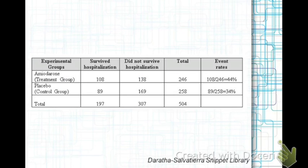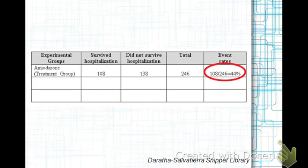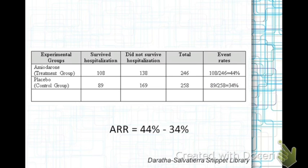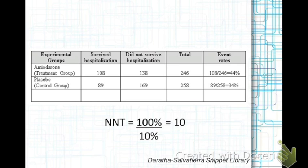Consider the example of patients randomized to a group receiving the antiarrhythmic drug amiodarone and another group receiving a placebo. To calculate NNT, you need to calculate the absolute risk reduction, or ARR. ARR is the difference in the experimental event rate, or 44%, and the control event rate, or 34%. To determine NNT, take the inverse of the absolute risk reduction.